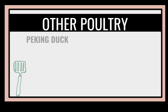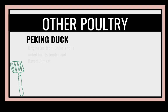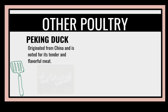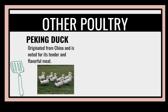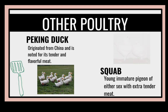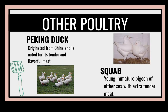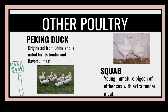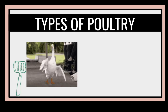Other poultry includes Peking duck, which originated from China and is noted for its tender and flavorful meat. For squab, they are a young, immature pigeon of either sex with extra tender meat. But be careful with the squab — it can cause hypertension when eaten.